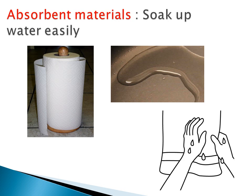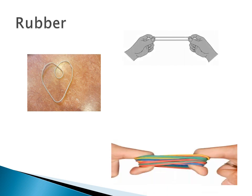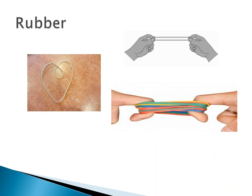This is rubber and this is an elastic band — I made a heart shape with it. This material is bendy and I can stretch it with my hands because it is a flexible material. It is both flexible and bendy.